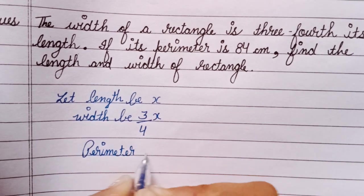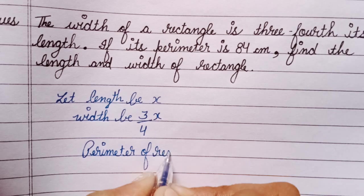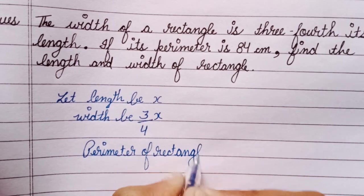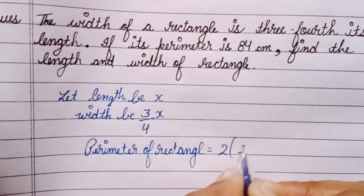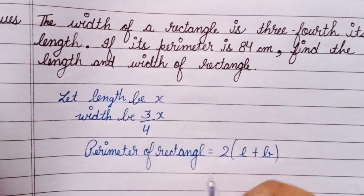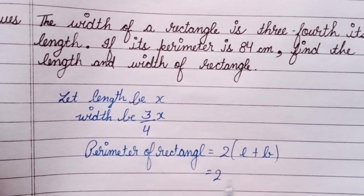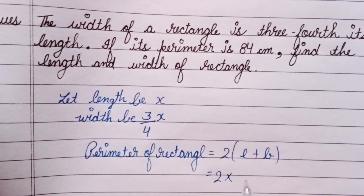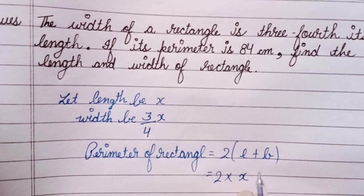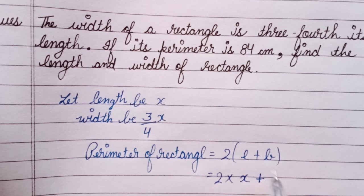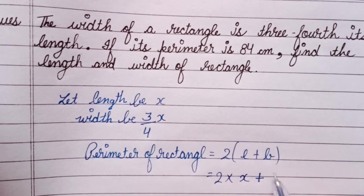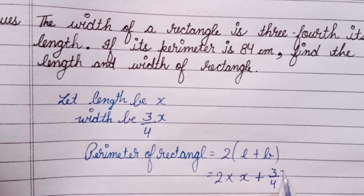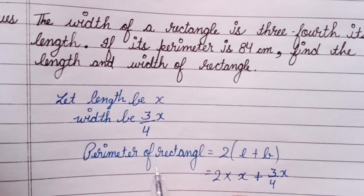Perimeter of rectangle is equal to 2 into l plus b, it means 2 into l plus b. L means length which is x, plus b means breadth means width which is 3 upon 4x. And the perimeter of rectangle is given which is 84 cm, so write here 84.